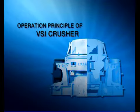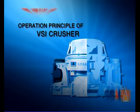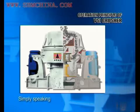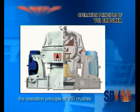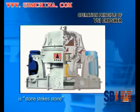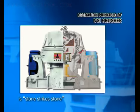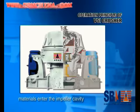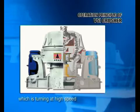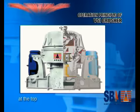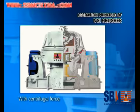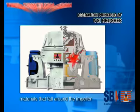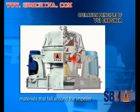Operation Principle of VSI Crusher. Simply speaking, the operation principle of VSI Crusher is stone-strikes-stone. Materials enter the impeller cavity, which is turning at high speed, at the top. With centrifugal force, the materials will impact on other materials that fall around the impeller.